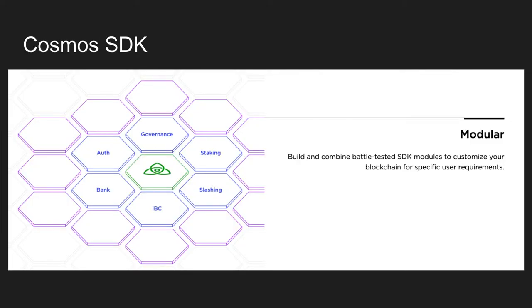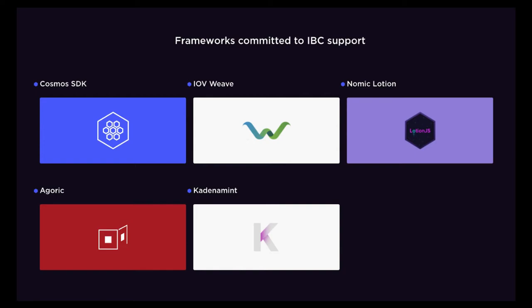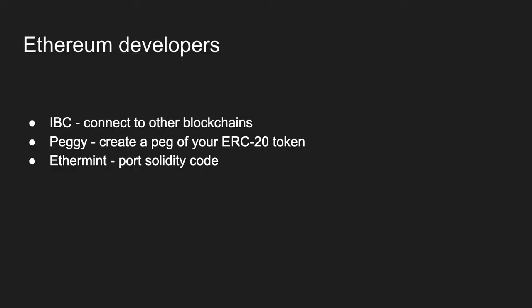The quickest way to get started using IBC is with the Cosmos SDK — IBC is just a module you can use right out of the box, just like slashing, staking, governance, auth, and bank. Some of the frameworks committed to IBC support include the Cosmos SDK, IOV Weave, Nomic Lotion or Lotion.js, Agoric, and Cadenamint. For Ethereum developers, you'll probably want to use IBC to connect to other blockchains, PEGI to create a peg of your ERC-20 token, and EtherMint so you can port your Solidity code over to the Cosmos ecosystem.